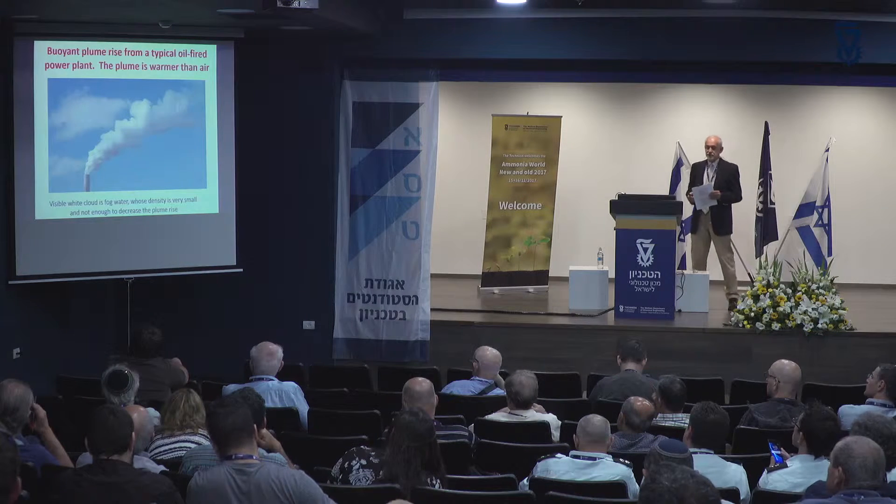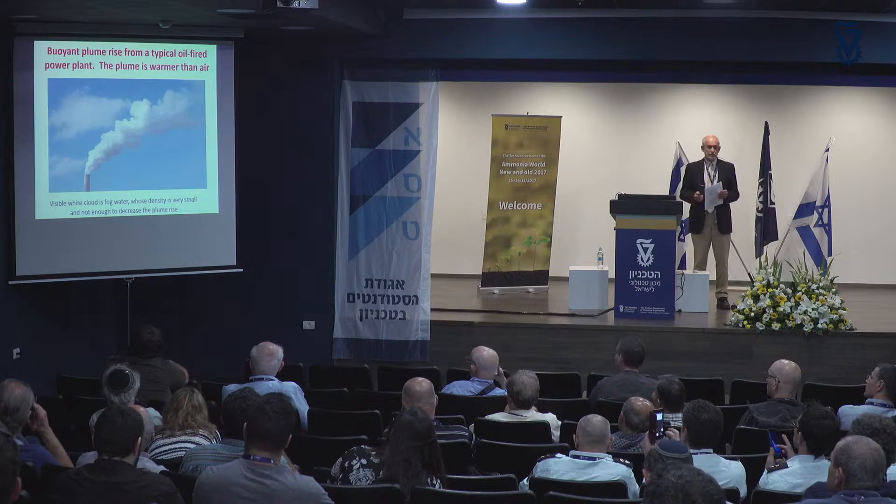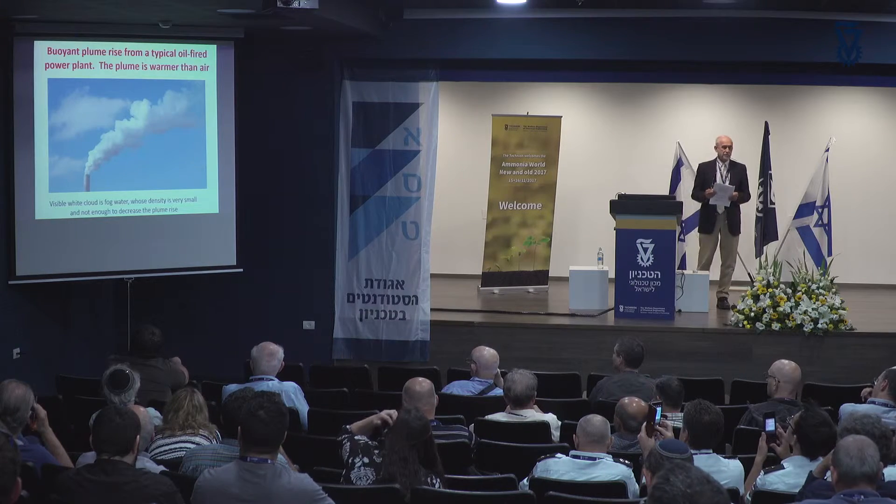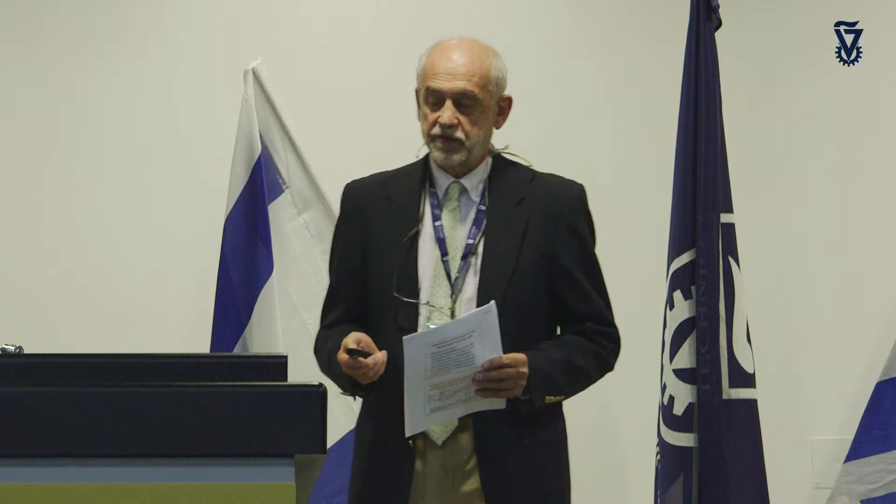Here is a standard picture of buoyant plume rise. You can see this in Israel by driving between Tel Aviv and Haifa — there are many stacks and you can see buoyant plumes. In this case there's a white cloud there, it's probably fog water. Even though it looks like there's a lot of it, the density is not enough to make the plume dense.